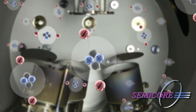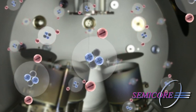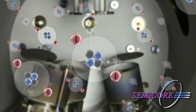Process gas species are chosen based on the type of material to be deposited. Common process gases include argon, oxygen, and nitrogen.